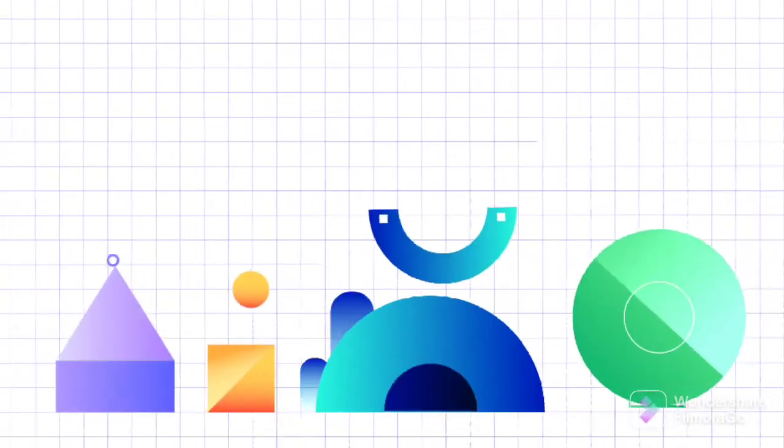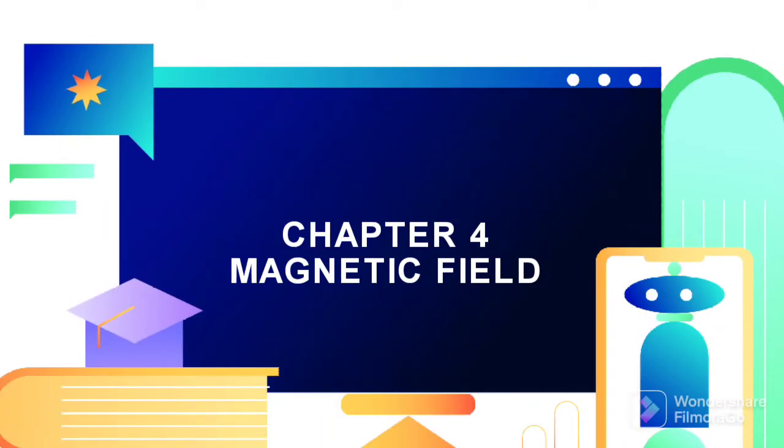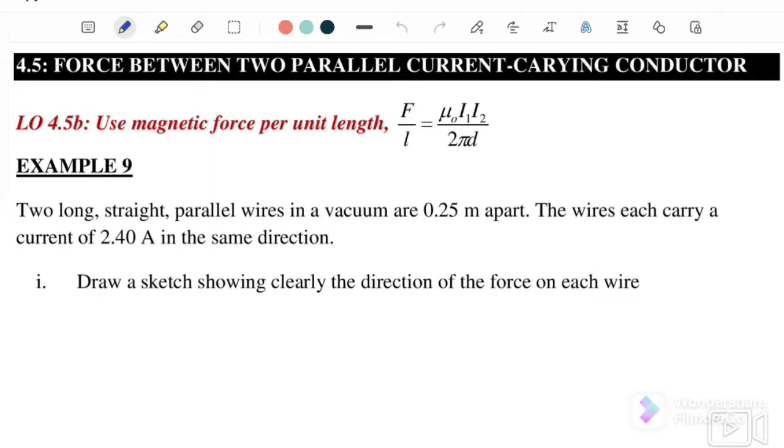Today we continue with Chapter 4, Magnetic Field. In this video we're going to discuss 4.5, force between two parallel current-carrying conductors. The equation that we use for this subtopic is the magnetic force per unit length: F over l equals mu naught i1 i2 over 2 pi d.